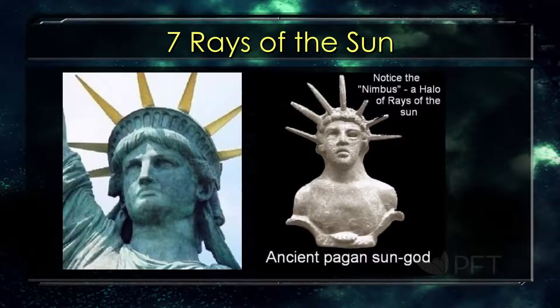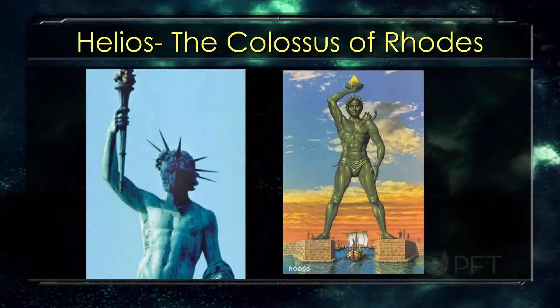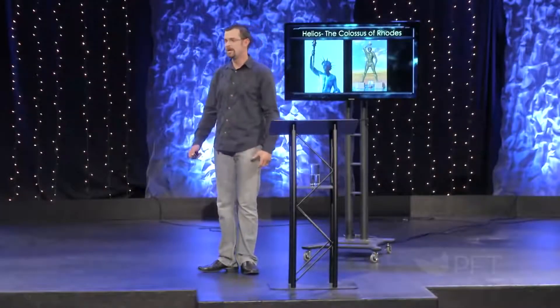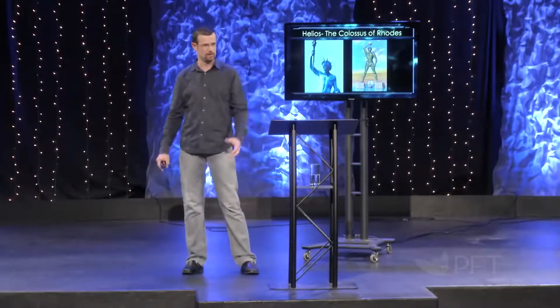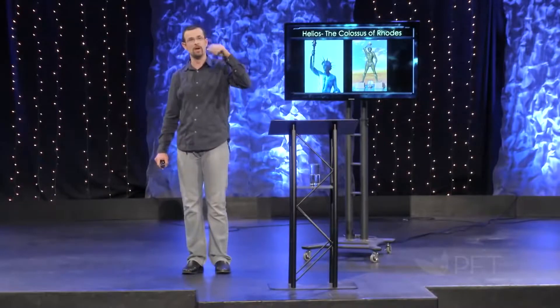Let's go one further. The seven rays of the sun — notice the nimbus, the halo of rays of the sun. This is an ancient pagan sun god symbol. It's everywhere; this is not something they just made up. Helios — look at this — holding a torch. He's the Colossus of Rhodes, one of the seven wonders of the ancient world. Where did Bartholdi get the idea of the torch? Ladies and gentlemen, he took a trip to Egypt and studied these things. This is what he saw — an over-a-hundred-foot colossus of Helios with this headpiece of the seven rays of the sun. Don't tell me that didn't influence him. The exact attributes of Helios and the sun god show up in the Statue of Liberty.